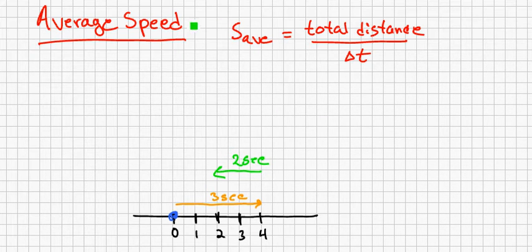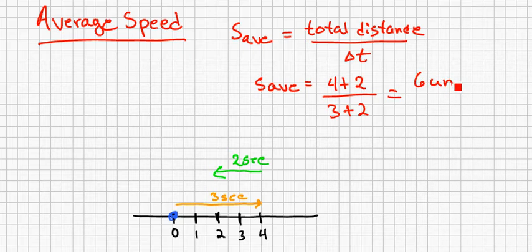By definition of average speed, in this case, we'd have S sub-av equals total distance. Total distance is going to be four units to the right, plus the two that traveled to the left, over the total time, which is three seconds traveling to the right and two seconds traveling to the left. This will be six units in five seconds.